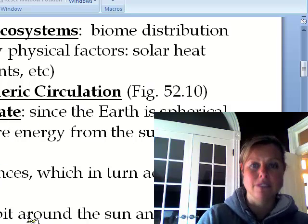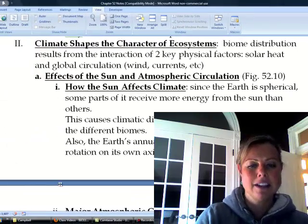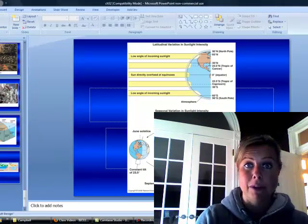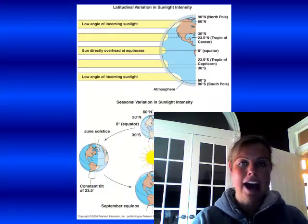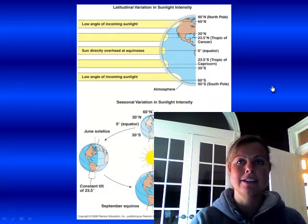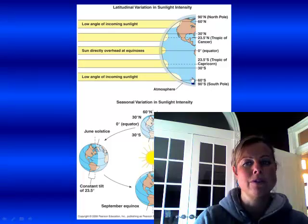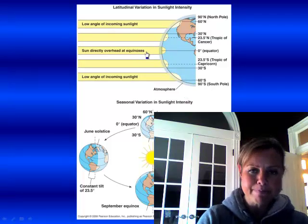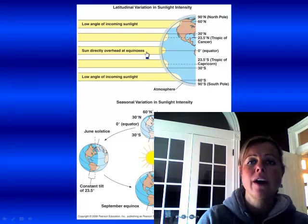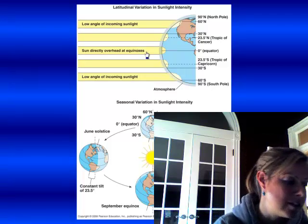The sun is really going to have a huge effect on climate. And since the earth is round, what's going to happen is there are going to be different angles of sunlight hitting the earth based on its curve. The poles are going to get less solar energy than at the equator, and that's definitely going to account for the climate differences that we have.